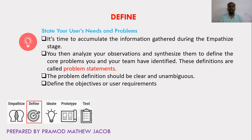The next phase is Define. The aim is to state your users' needs and problems. In this phase, the designer accumulates information gathered during the Empathize stage — through questionnaires, surveys, documentation, research, interviews, etc. All these user needs are properly defined in a problem statement. The problem definition should be clear and unambiguous, meaning there should not be any two user needs conflicting with each other. This phase defines the objectives and user requirements expected from the system.